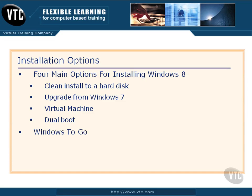Windows To Go is an option where we run the entire Windows operating system off of a USB device — it can be a thumb drive or an external USB drive, and it does support USB 3.0, which is much faster than 2.0. However, I'm not going to go into it very deeply here because it is an advanced technique and not as simple and wizard-driven as the other four options.